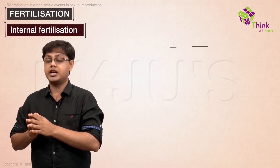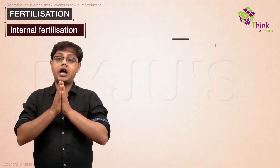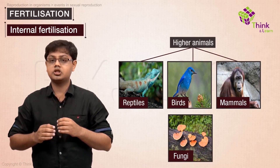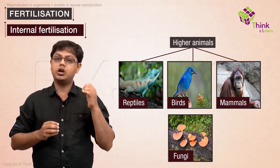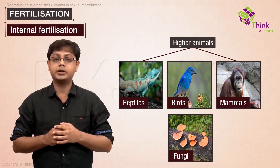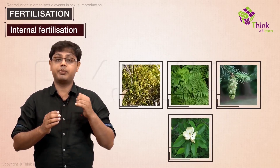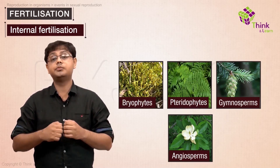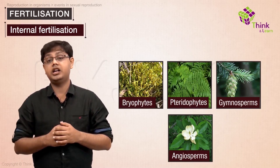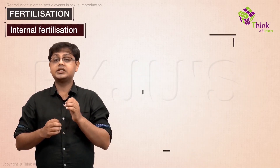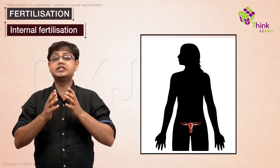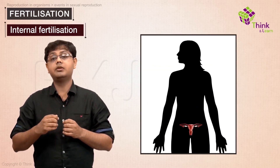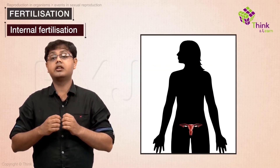When fertilization occurs inside an organism, it is called internal fertilization. It is common in many terrestrial organisms — higher animals such as reptiles, birds, and mammals — and also in a few fungi. It is also seen in bryophytes, pteridophytes, gymnosperms, and angiosperms.